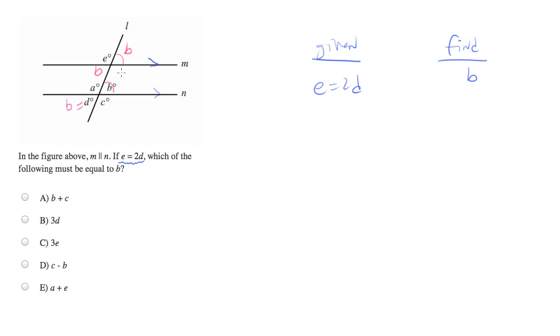Now let's start labeling some of the other angles. Actually, let's do a little simplification first. We were originally given e is equal to 2d, but now we know that d equals b, so I can actually say e equals 2b.